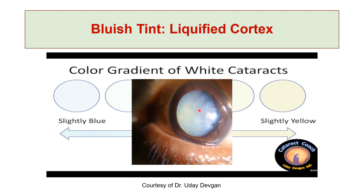This is a picture of a white cataract with a bluish tint, representing the liquefied cortex. And you can see the sectoral markings in the anterior cortex and the fluid vacuoles.